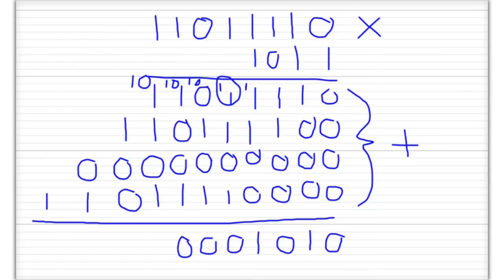We put 1 down here and carry 1, 0 up. Now we have 1, 0 plus 1 — basically 2 plus 1 which is 3 — so that's 1, 1: 1 down there and 1 up here. Then 1 plus 1 is 1, 0 — put 0 down and 1 up here. And 1 plus 1 is 1, 0. So the answer is 1, 0, 0, 1, 1, 0, 0, 0, 1, 0, 1, 0, 1, 0.